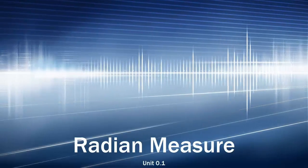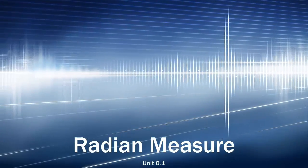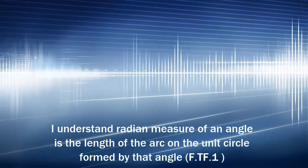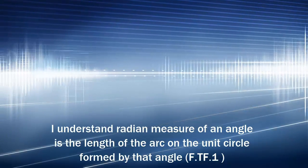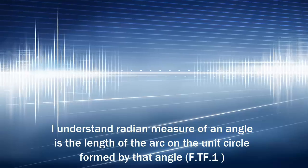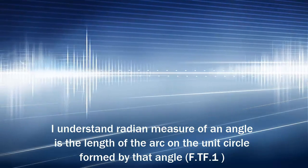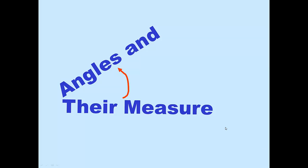Welcome to Trigonometry. We're going to begin with a discussion about radians and radian measure. By the end of this, you should be able to understand that the radian measure of an angle is the length of the arc on the unit circle formed by that angle.